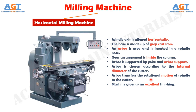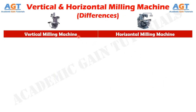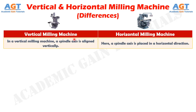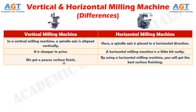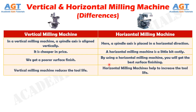What are the main differences between horizontal and vertical milling machines? In a vertical milling machine, the spindle axis is aligned vertically, whereas in a horizontal milling machine, the spindle axis is placed horizontally. A vertical milling machine is cheaper in price, whereas a horizontal milling machine is a little bit costly. A vertical milling machine gives poorer surface finish, whereas a horizontal milling machine gives the best surface finishing. A vertical milling machine reduces the tool life, whereas horizontal milling machines help to increase the tool life.